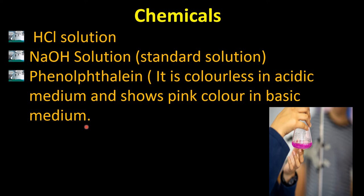Phenolphthalein is colorless in acidic medium and shows pink color in basic medium. It is an indicator that provides a color change, and through this color change you can easily reach the end point. We take a base in the flask, add one to two drops of phenolphthalein, then shake it well. When HCl solution falls into it drop by drop, the color will change slowly and carefully, showing that the reaction is nearing completion. In acid-base titration with strong acid and strong base, we mostly use phenolphthalein indicator, which gives a dark magenta pink color at the end point.